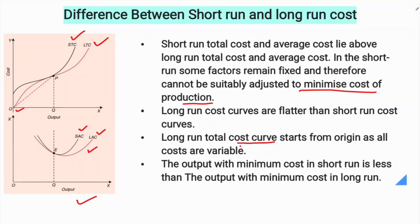The long-run total cost curve also starts from the origin as all costs are variable. The third point is: the output with minimum cost in the short-run is less than the output with minimum cost in the long-run.